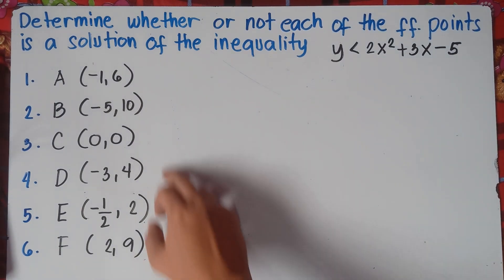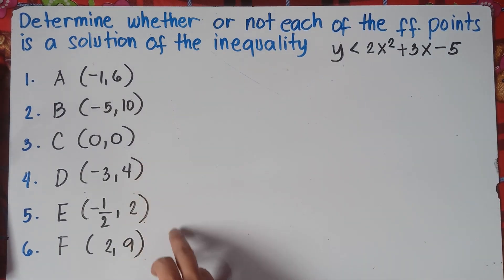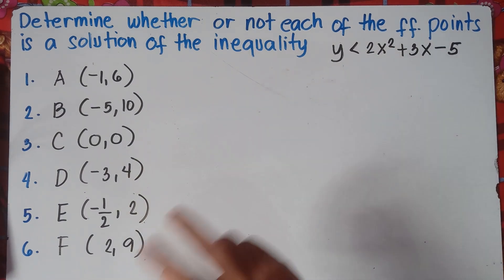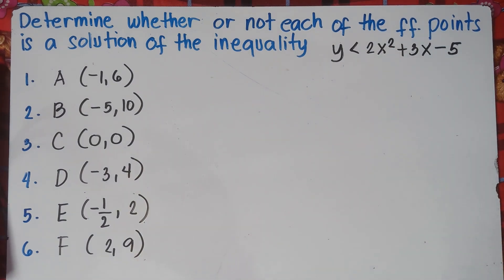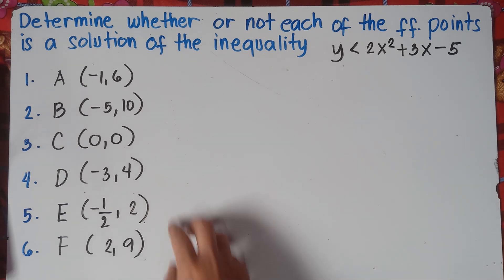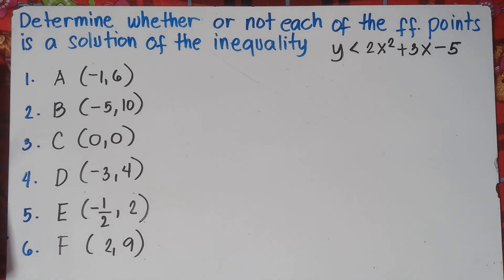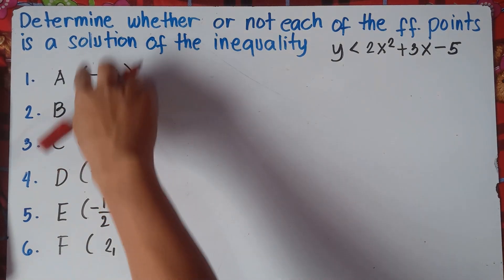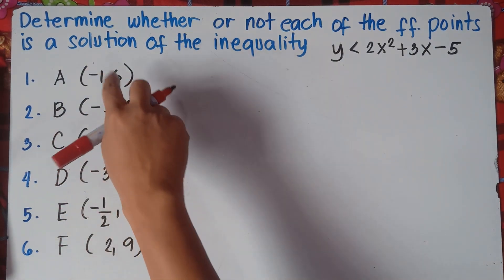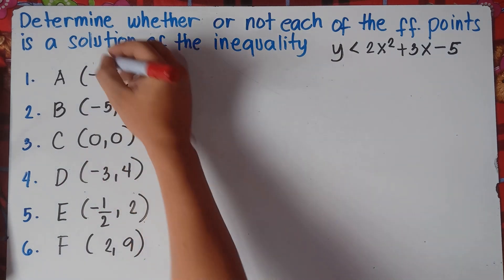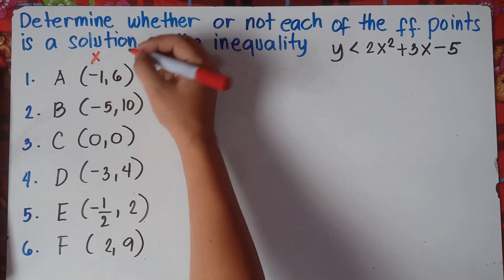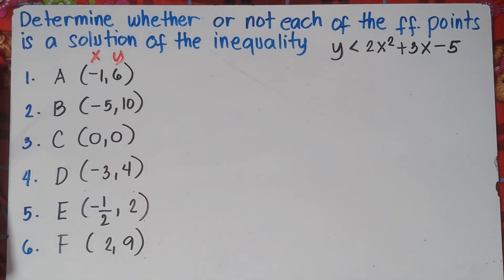Now to determine if this point is a solution of this inequality, you just simply substitute the value of x and the value of y. Once again, if you have these following points, you need to think about the ordered pair. Just remember the ordered pair — how to determine what would be our x and what would be our y.